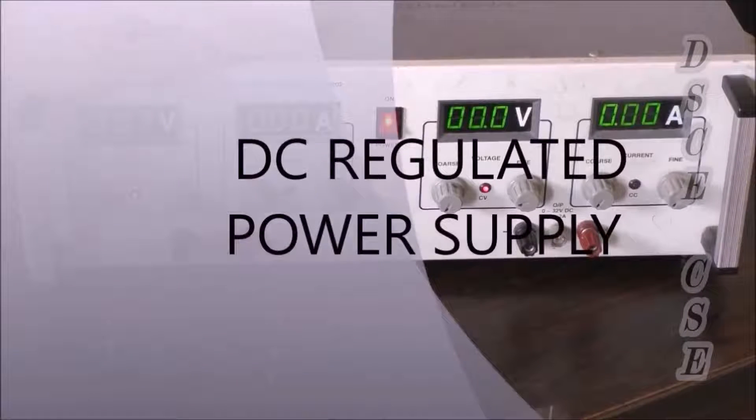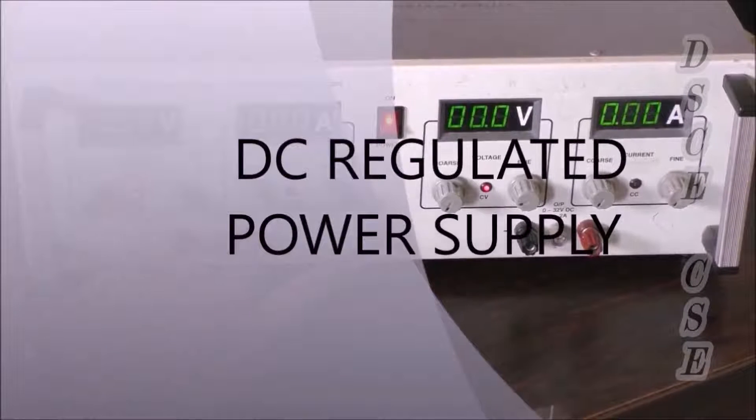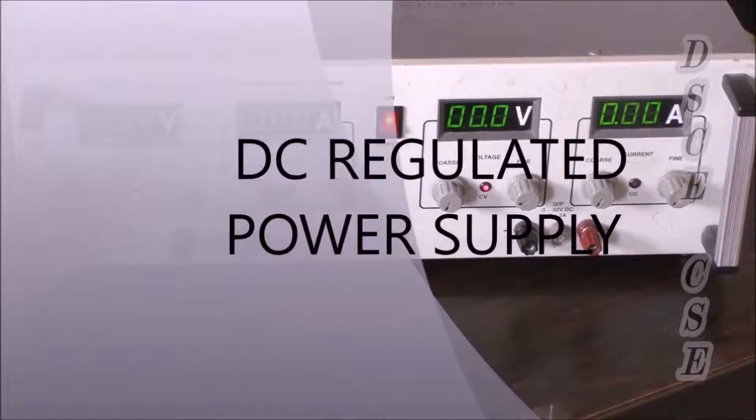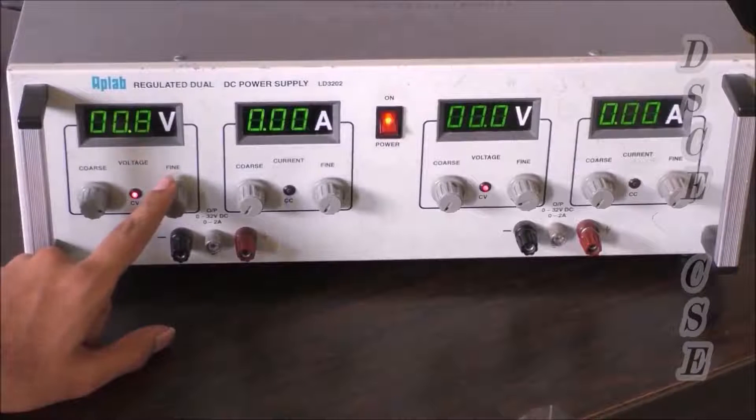This is DC regulated power supply. This is voltage and this is the current. These knobs are used to set the voltage. This is for fine adjustment of the voltage.